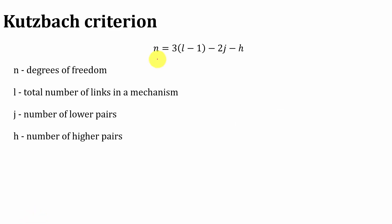The equation for calculating the degrees of freedom using Kutzbach criteria is N = 3(L - 1) - 2J - H. Here, N is the degrees of freedom of the mechanism, L is the total number of links in a mechanism, J is the number of lower pairs, and H is the number of higher pairs.